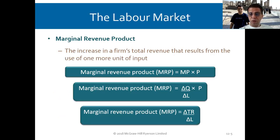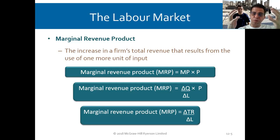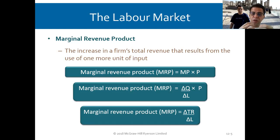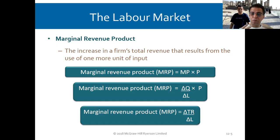In the labor market, we have what you call the marginal revenue product. We're going to reverse it now — there are firms needing laborers to produce, so the laborers are the suppliers and the firms are the consumers. The marginal revenue product is the increase in a firm's total revenue that results from the use of one additional unit of labor. For example, with two people I produce four units; I bring one more person and I produce five or seven units. So MRP equals marginal product multiplied by price.